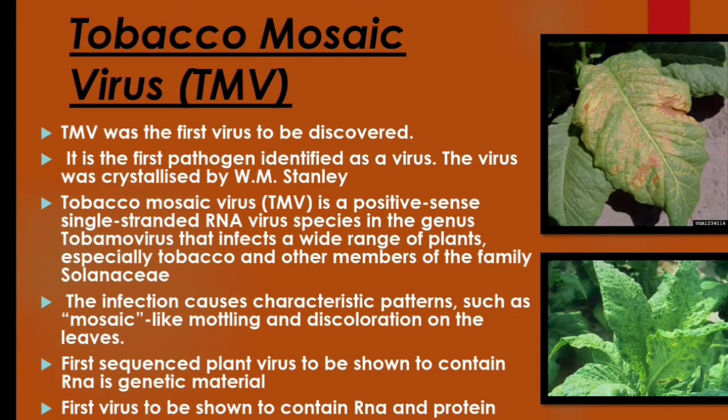TMV was the first virus to be discovered. It is the first pathogen identified as a virus. The virus was crystallized by WM Stanley — this is the first virus to be crystallized. Tobacco Mosaic Virus is a positive single-stranded RNA virus.